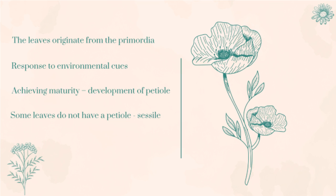These environmental cues will stimulate the cells to further undergo cellular division. In the time span of a couple of days or weeks, the cells would have rapidly multiplied from their initial count of 200 cells to millions of them. By the time the leaf has reached its maturity, it must have developed a stalk, which is also referred to as the petiole.